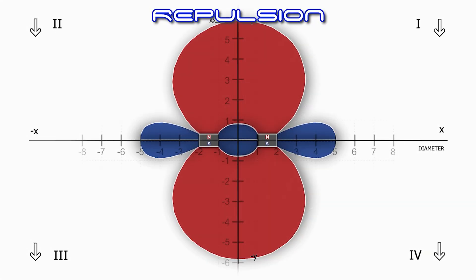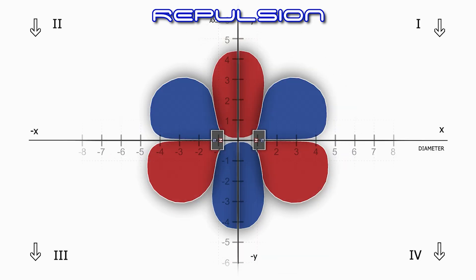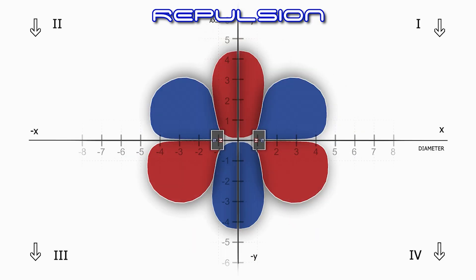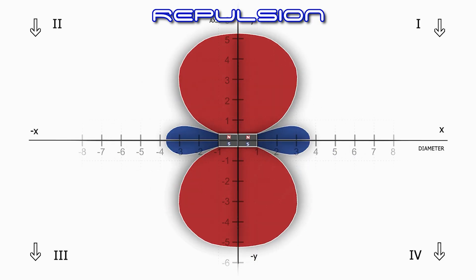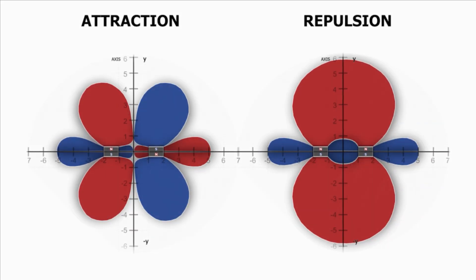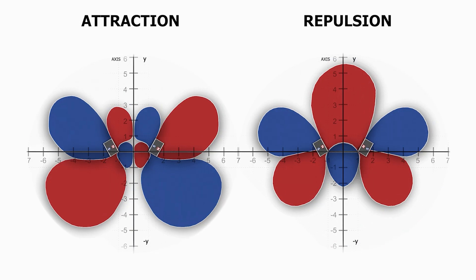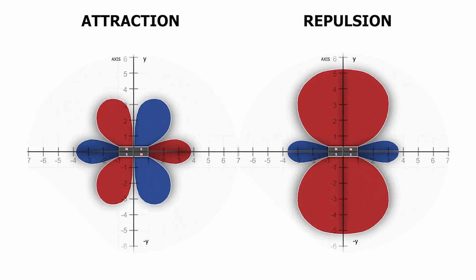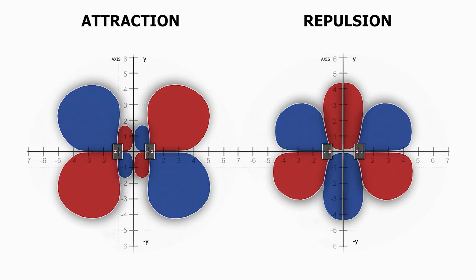The second GIF shows the same magnets, but this time arranged in repulsion. Here are both GIFs side by side so you can see the differences for yourself. Isn't it magnificent? If only we could see these interactions live with our own eyes, it would be breathtaking.